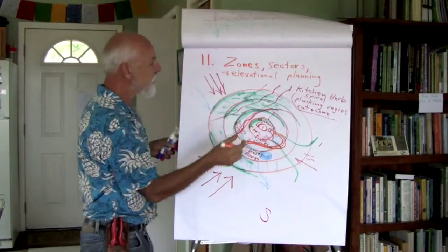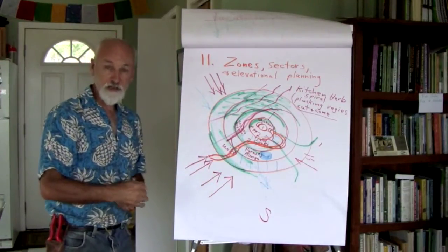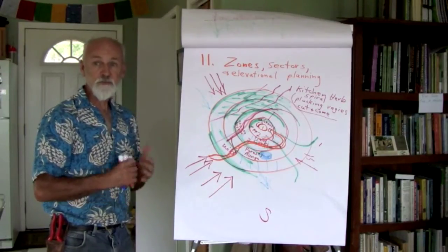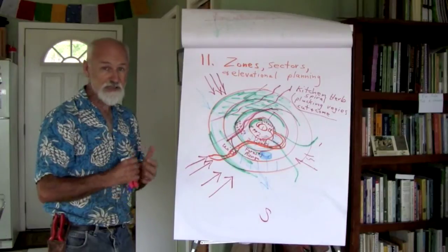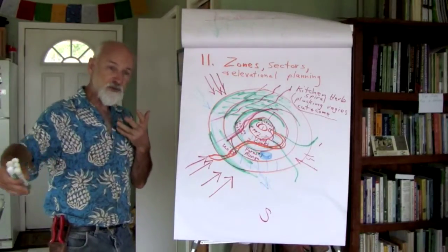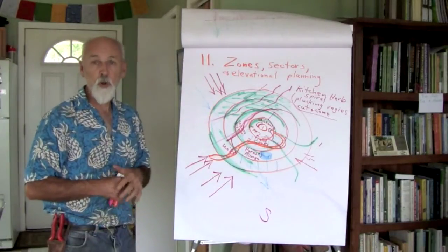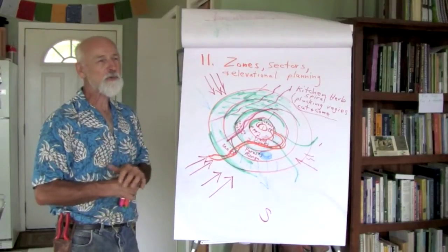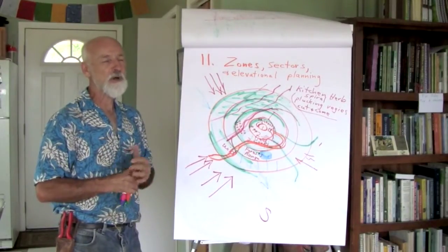The elevational planning, again, that's a long lecture, but it's basically, how do we take advantage of slopes? How do we take advantage of gravity? How do we place things in the landscape so that the natural, you know, the fruit rolls into the house, for instance. So to speak. How do we use gravity to our advantage?